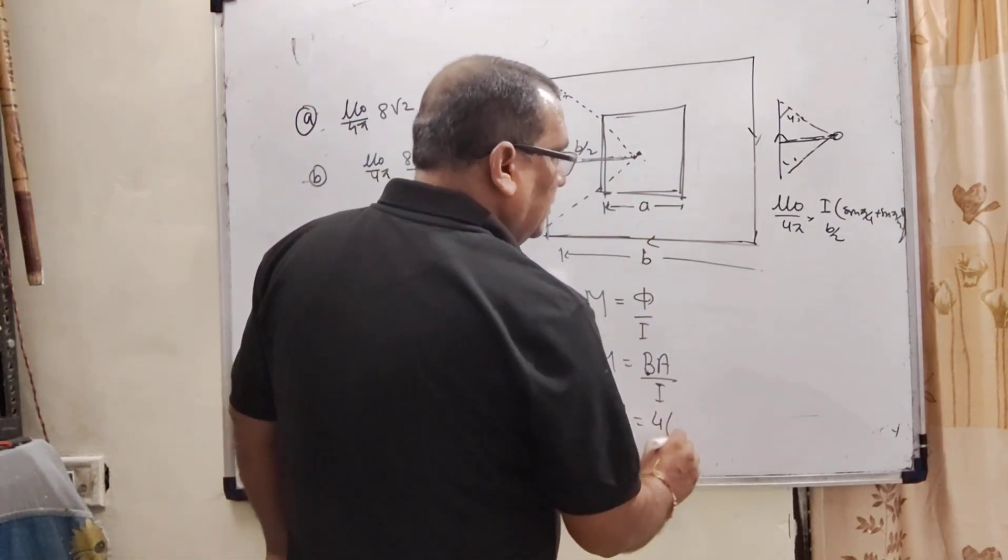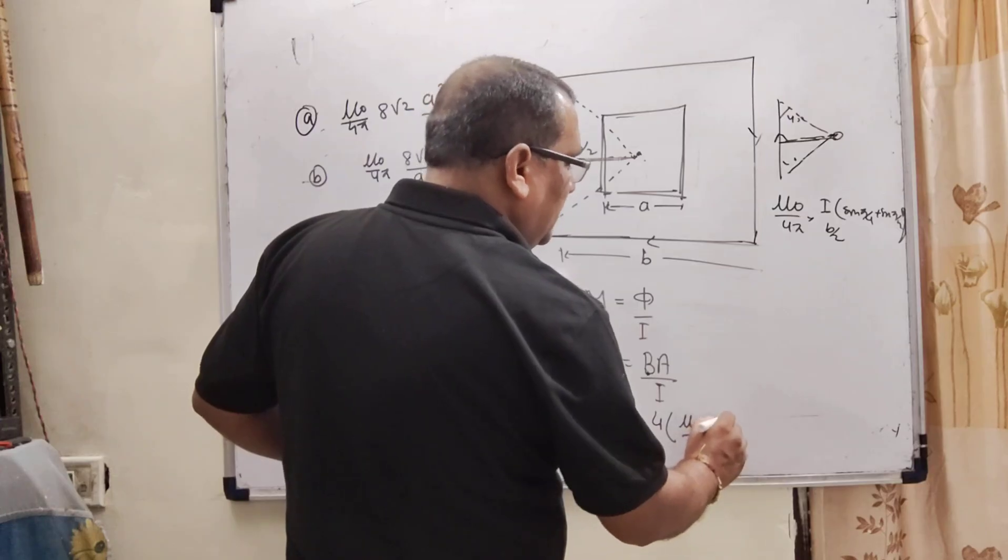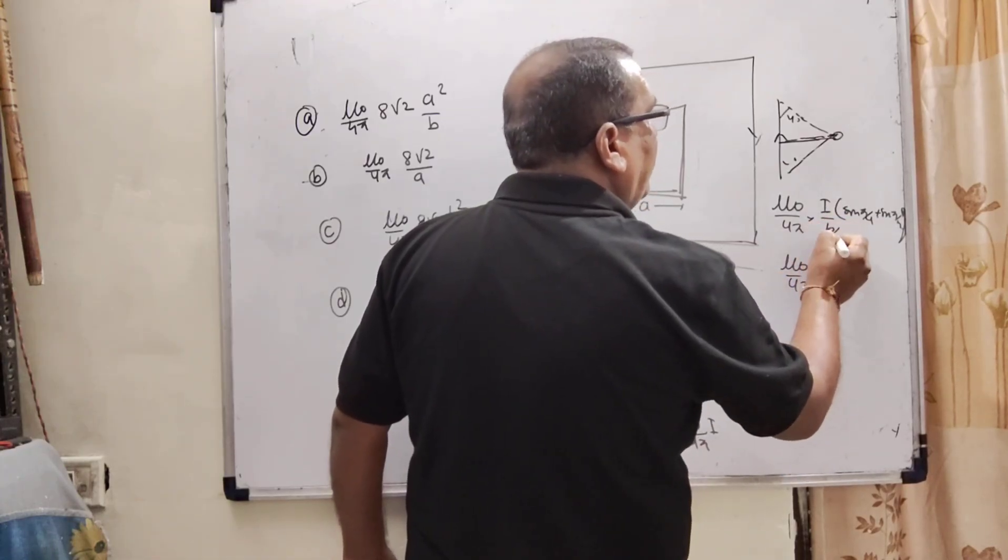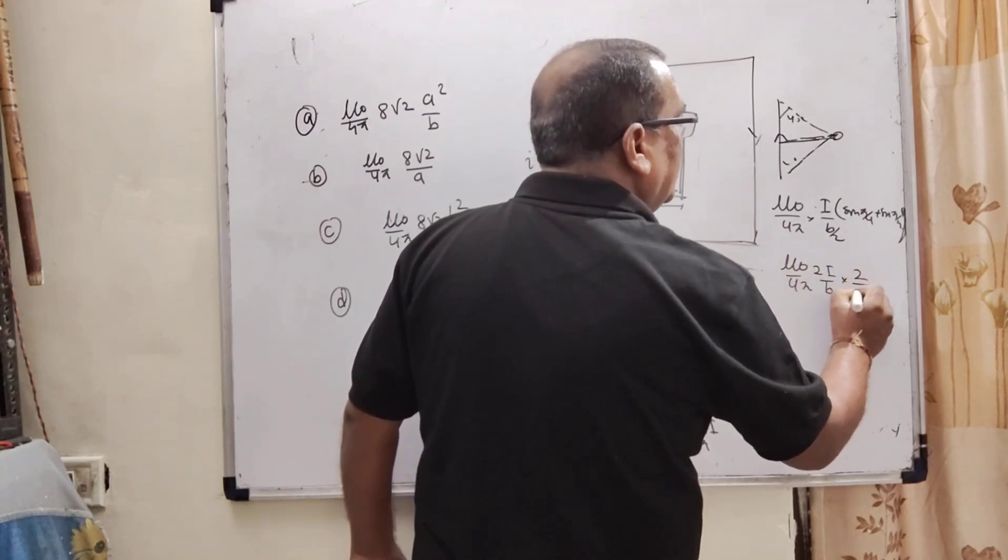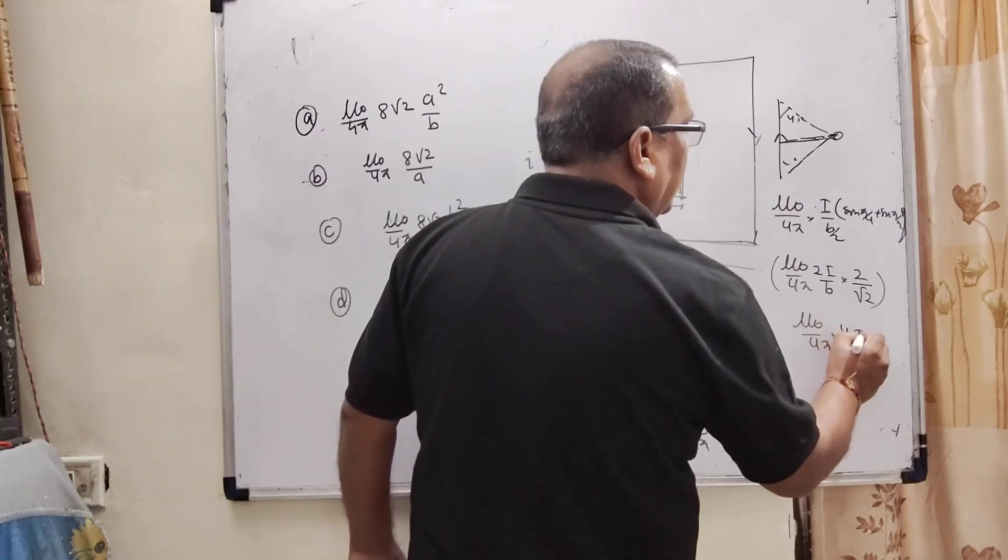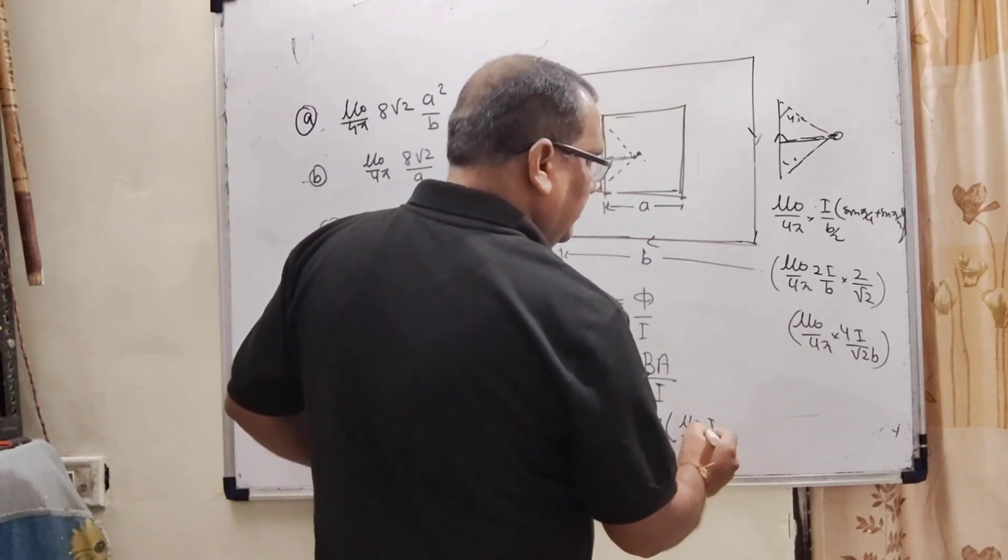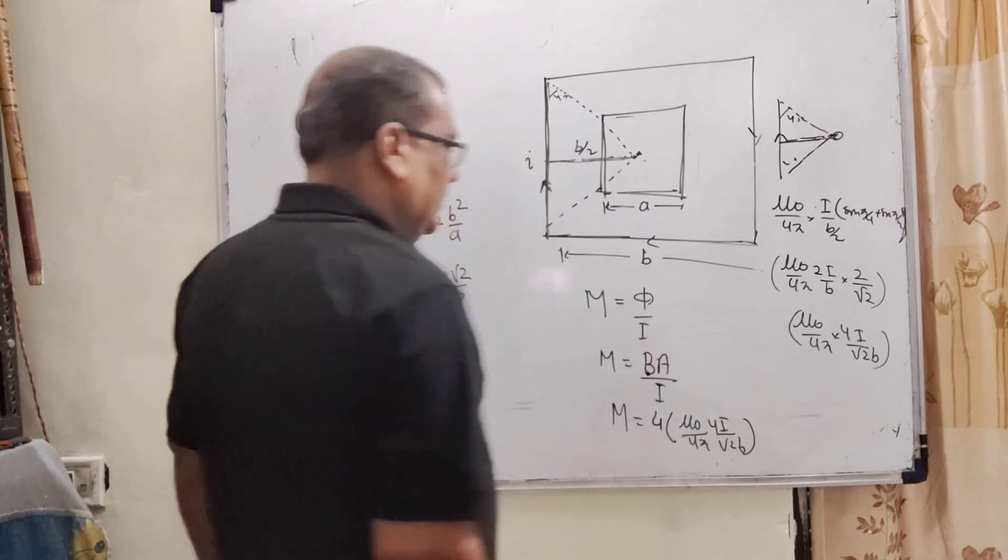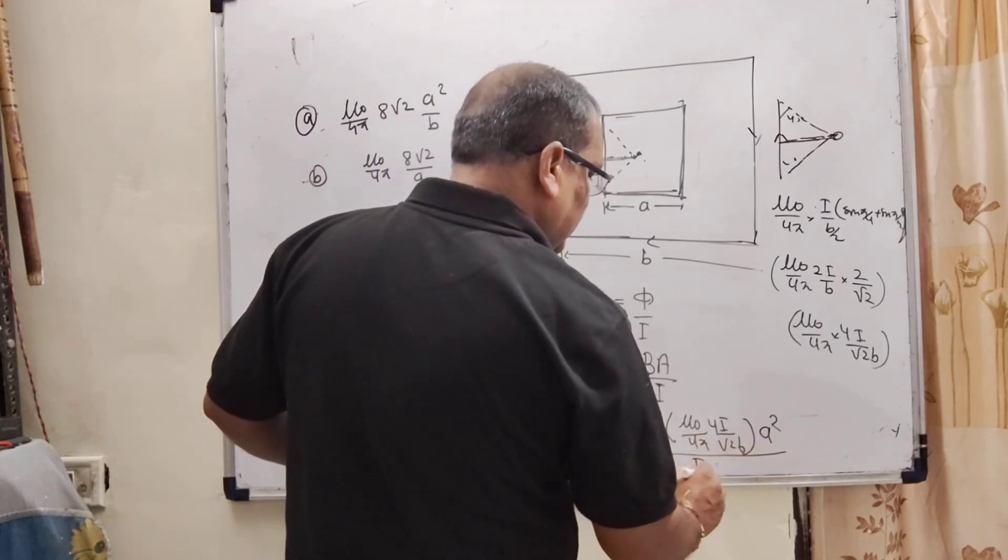So here 4 into μ₀/4π. Here I sine 45 plus sine 45, so μ₀/4π. This upon reaches to the numerator means 2I by B and here 1/√2, 1/√2 means 2/√2. So μ₀/4π and 4I by √2B. This is magnetic field. Area, this is area of the inner loop that is A² and this is I.